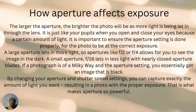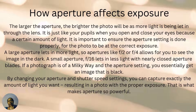Aperture gives you control over how much detail you can really see. You can actually get away with the image being dark through aperture rather than shutter speed, because once your lighting is too low with shutter speed, it's too low. A small aperture, which is f/16, lets in less light with nearly closed aperture blades. If a photo is taken of the Milky Way and the aperture is set too small, you will essentially get an image that is black. By changing the aperture and shutter speed you can capture exactly the amount of light you want.